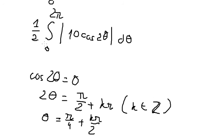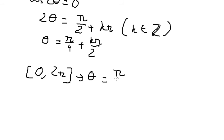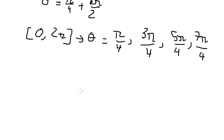From the solutions we identify the key angles: 0, pi over 4, 3pi over 4 when k equals 1, 5pi over 4 when k equals 2, and 7pi over 4 when k equals 3. So we will have 5 intervals in total.